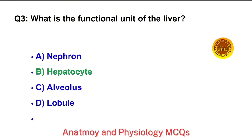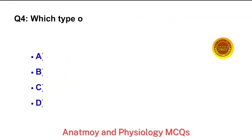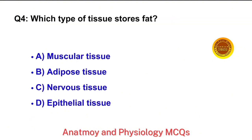Question No. 4. Which type of tissue stores fat? The right answer is option B: Adipose tissue.